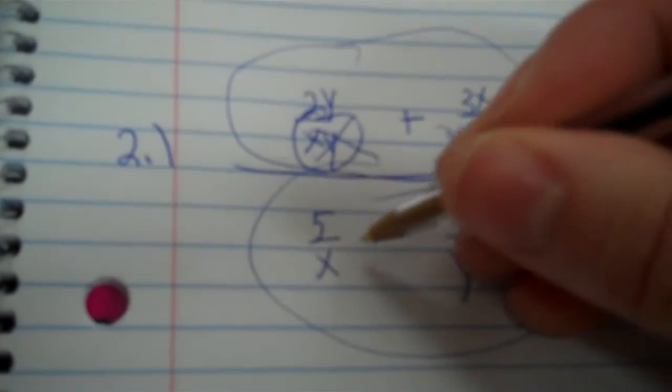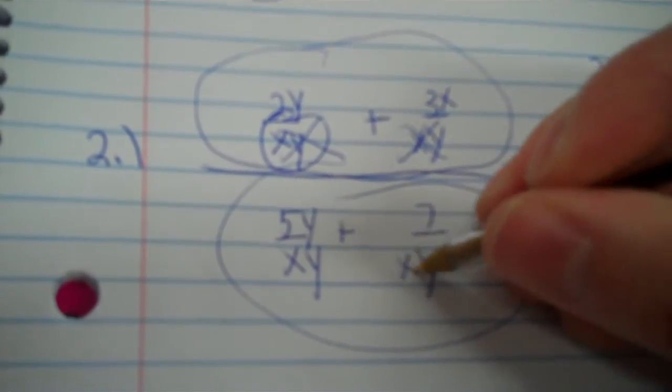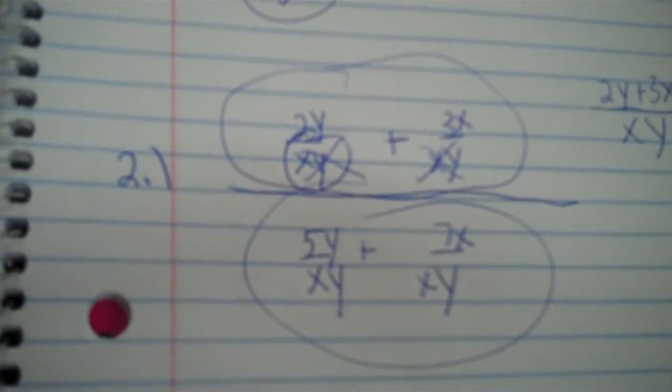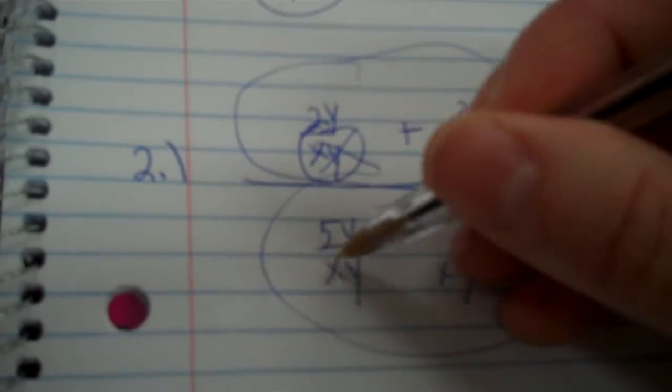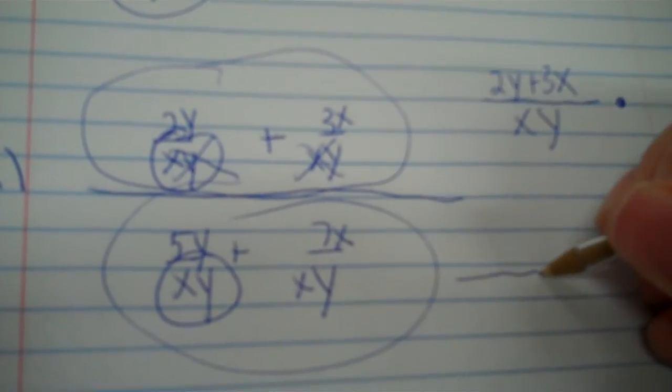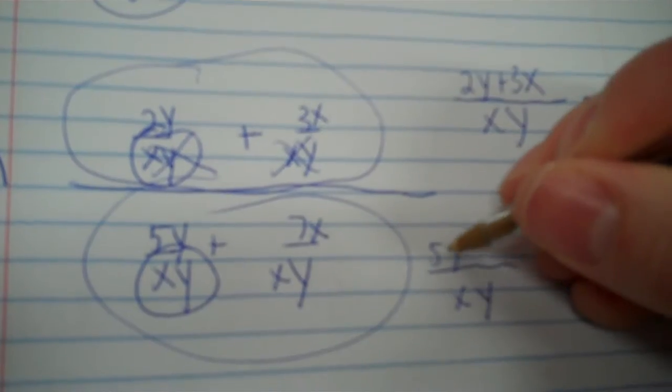Now I have to do kind of the same thing on the bottom. So if I y, y, and x, x. Now I have a common denominator of x, y. And I got five y plus seven x.